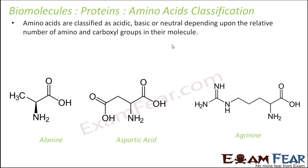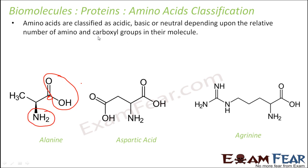For every amino acid you will have one carboxyl group — that is the COOH group — and you will have one amino group. Now we know that the carboxyl group is acidic in nature, whereas the amino group is basic in nature.